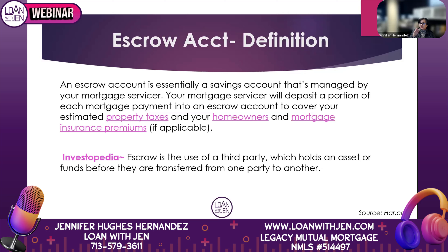Your tax and insurance go into the escrow account each month. Then at the end of the year, whatever the due date is for insurance, for example, there will be an exodus from your account. So there's incoming money every month you make your payment, and then there's outgoing money a few times a year that pays tax, insurance, and mortgage insurance if you've got it.